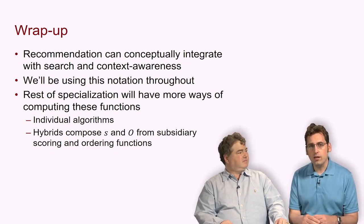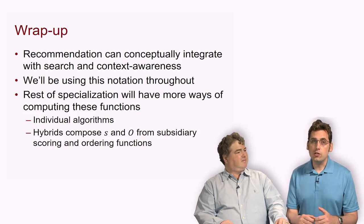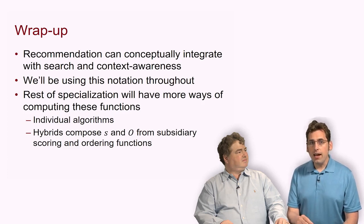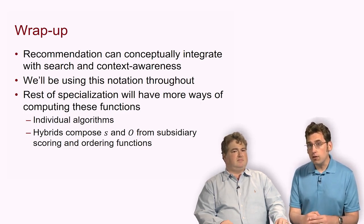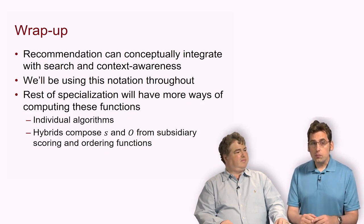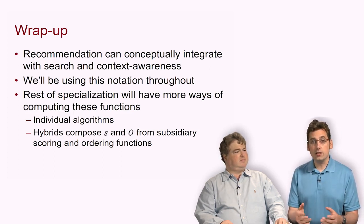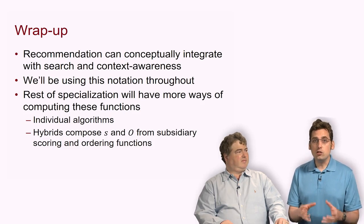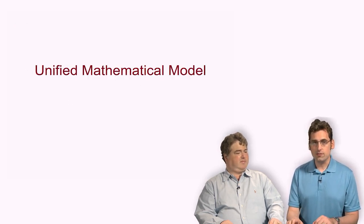We've talked, hopefully you've seen here, that recommendation can conceptually integrate with search and context awareness. Throughout the remainder of these courses, we're going to be using this notation. When we're talking about a way to score items, we're going to write an S function. When we're talking about ordering, we're going to write an O function. A lot of what we talk about will be more ways of computing these functions: individual algorithms, collaborative filters, and various machine learning techniques. We're also going to talk about hybrid algorithms that compose S or O from subsidiary scoring and ordering functions mixed together. This notation is going to serve as the general notational framework on which we hang a lot of the rest of the material in this set of courses. Thank you.